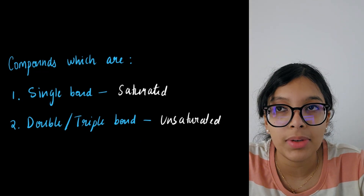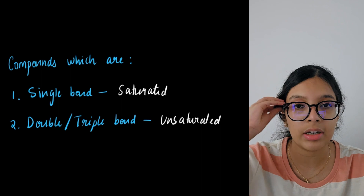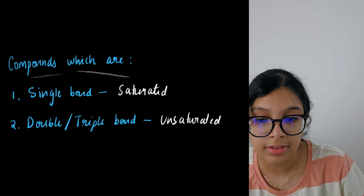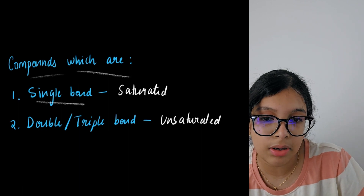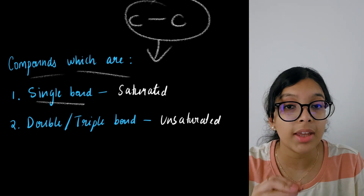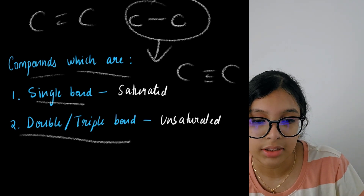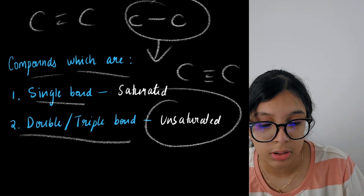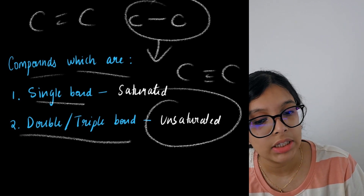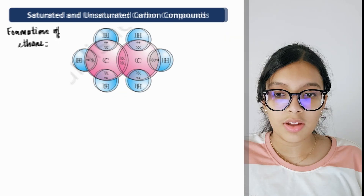Now we get to the organic part — nomenclature, the hardest part of chemistry, but learn it properly now as it continues till Grade 12. Compounds with a single bond — C-C — are called saturated compounds. Compounds with a double bond or triple bond are called unsaturated compounds. Single bond equals saturated; double or triple bond equals unsaturated.